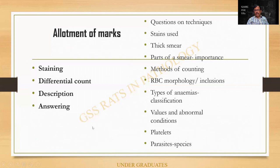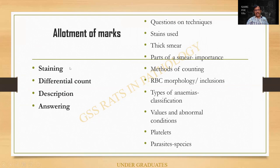Coming to the allotment of marks: marks will be allotted for staining, for doing the differential count, for making a description of the entire smear — that includes RBC, WBC, platelets, etc. — and for answering the questions the examiner asks. I give 2 marks for the entire exercise and 8 marks for answering.